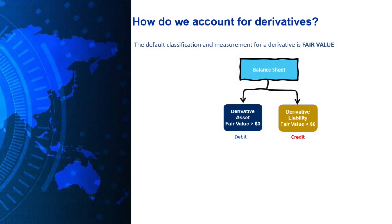Now that we know what a derivative is, let's look at how we account for them. The default classification and measurement for derivatives is fair value through the income statement. From a balance sheet perspective, if the fair value of your derivative is greater than zero, you report it as an asset. If the fair value is less than zero, you report it as a liability. For derivative assets, we debit the balance sheet; for derivative liabilities, we credit the balance sheet.